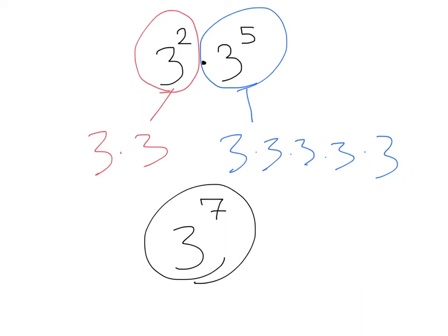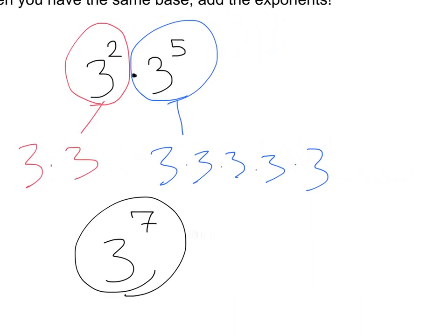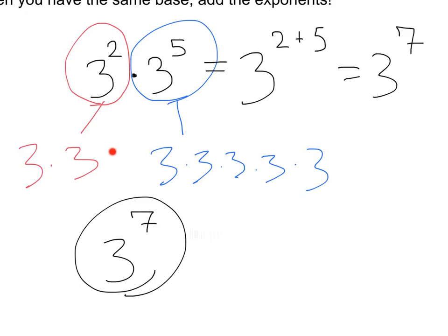So we can rewrite this as 3 to the 7th power. Now, if we went back up to our original problem, we have 3 squared times 3 to the 5th. It might have been quicker if we just went 3 to the 2 plus 5, which would also be 3 to the 7th. So instead of rewriting all our problems with a whole bunch of numbers, we can just add the exponents.